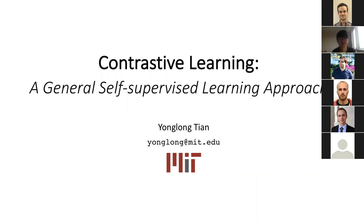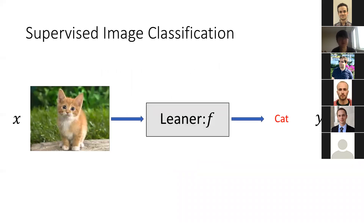I think contrastive learning is a general self-supervised learning approach. Before diving into contrastive learning, I will recap supervised image classification. Given an input image x, a learner — typically neural networks — tries to predict its semantic class, which here is a cat. Such a learner is typically updated by calibrating its output with human-annotated labels y.